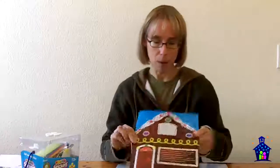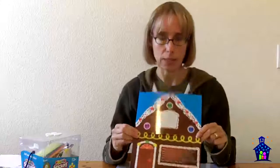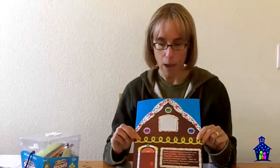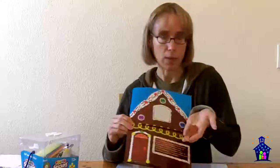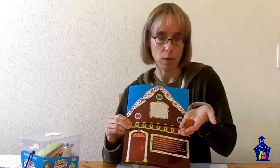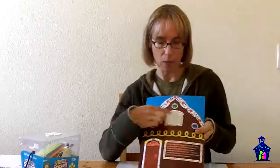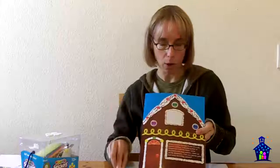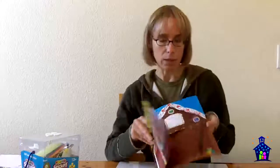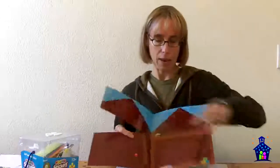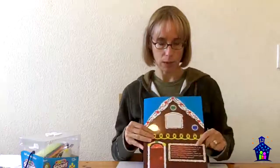Now, a super fun way to do that missing addend problem is actually to use our ginger house game board. And that's what these ginger kid chips go with. And then you would write the number that you're working with up here with the dry erase marker. And then you would hide those inside here. And then you would close up the house.